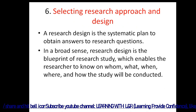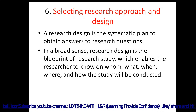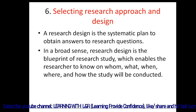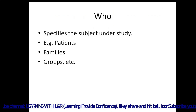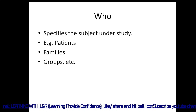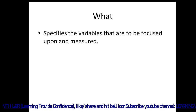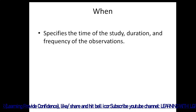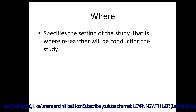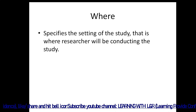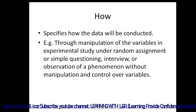The sixth step is selecting a research approach and design. A research design is a systematic plan to obtain answers to research questions. In a broad sense it is the blueprint of the study, enabling researchers to know who, what, when, where, and how the study will be conducted. 'Who' specifies the subjects — patients, families, or other groups. 'What' specifies the variables to be focused upon. 'When' specifies the time, duration, and frequency of observations. 'Where' specifies the setting — hospital, community, nursing colleges, or schools.